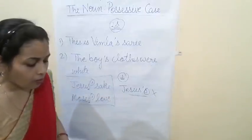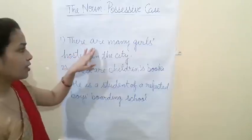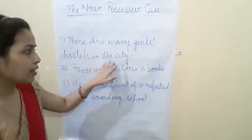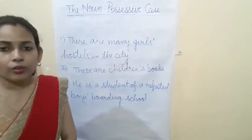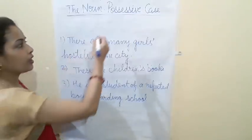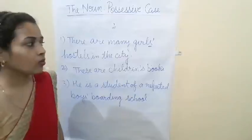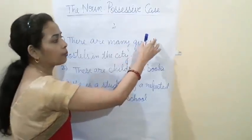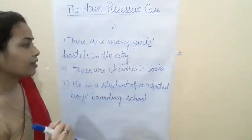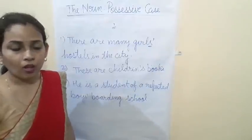Now let's move to the formation of possessive form of plural nouns. As I just told you, when we get the last letter S, we put only the apostrophe sign. For example, 'There are many girls' hostels in the city' — since 'girls' already ends in S, we put only the apostrophe sign and no extra S.